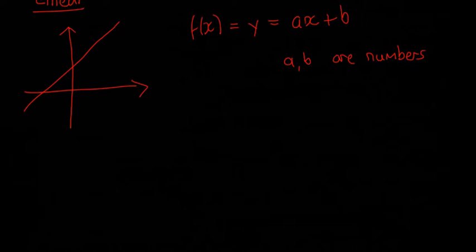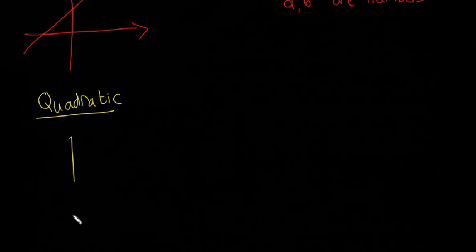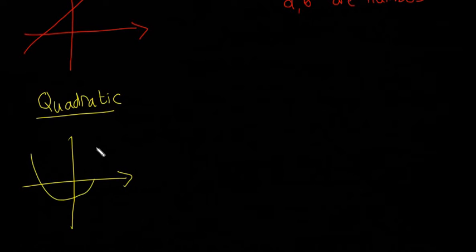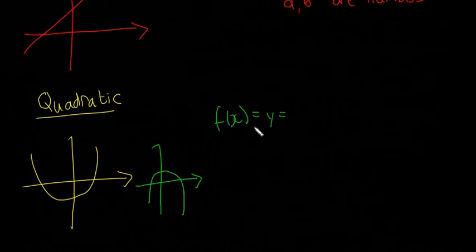Next, I'm going to talk about quadratic functions, which you would have seen quite a lot as well. Quadratics are going to be in the shape of either a U or in the shape of an n. They're in the form f(x) = y = ax² + bx + c, where a, b, and c are numbers.